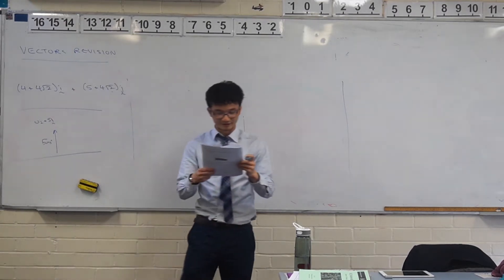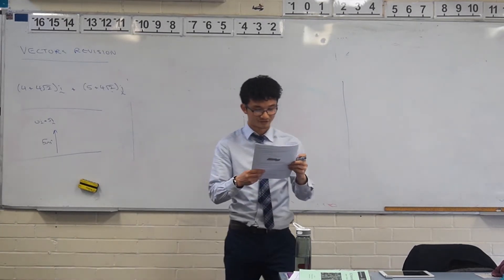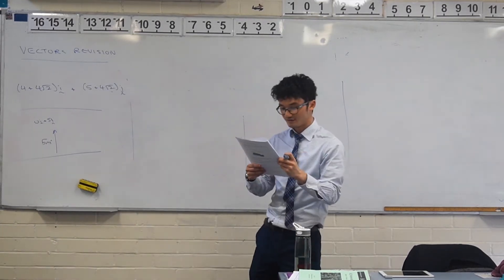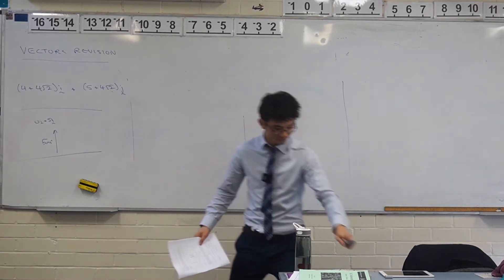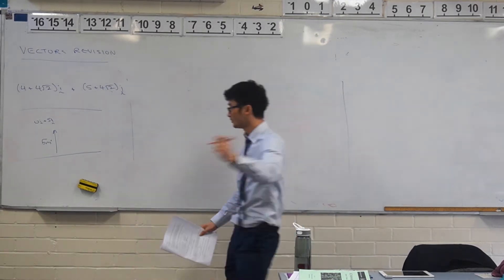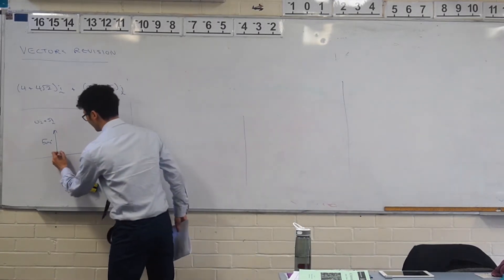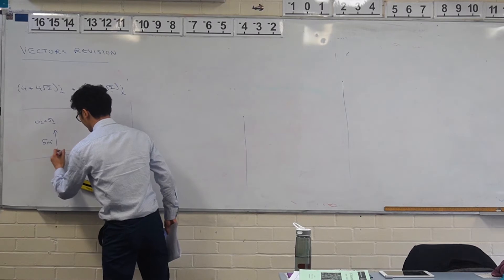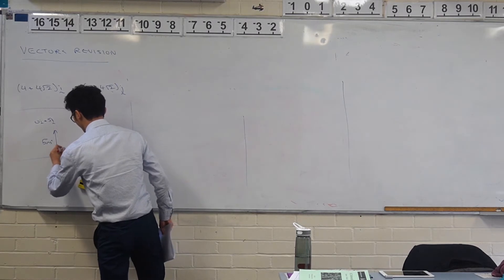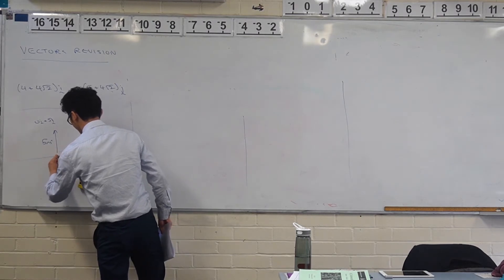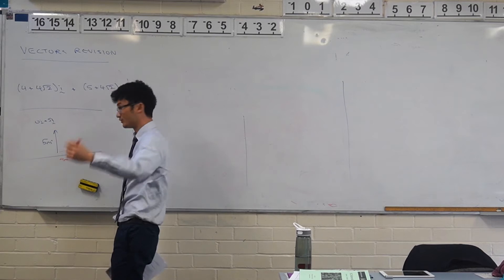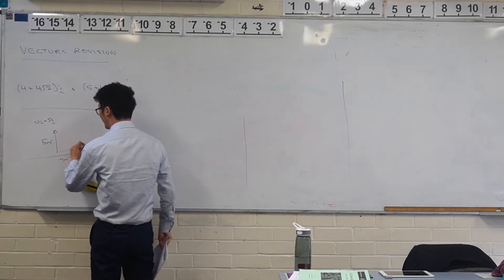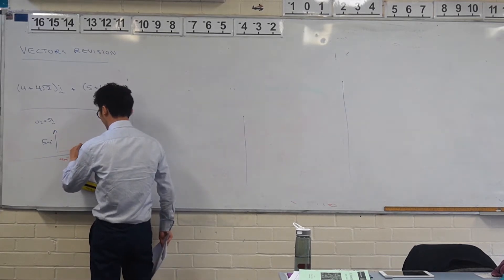What other things are happening here? We've got the water flowing. How fast is the water flowing? 4 meters per second. So that's 4i + 0j.